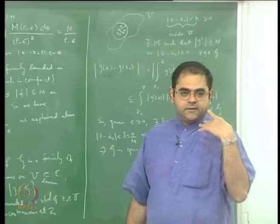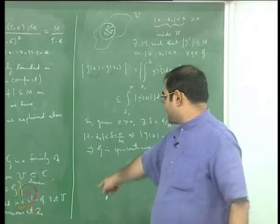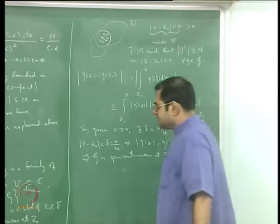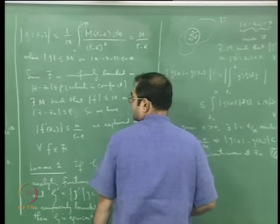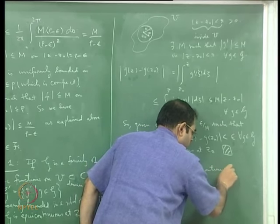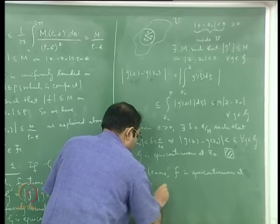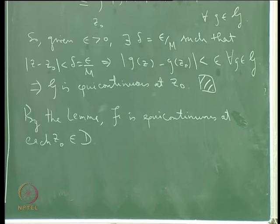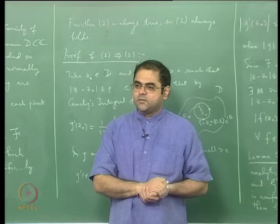For analytic functions the derivatives are bounded just because of Cauchy's formula, and since the derivatives are bounded, equicontinuity comes automatically — that is what the lemma says: whenever derivatives are uniformly bounded you get equicontinuity. So everything comes from just the uniform boundedness of the family of analytic functions on compact subsets, which automatically gives uniform boundedness of derivatives on compact subsets, and that gives equicontinuity everywhere.